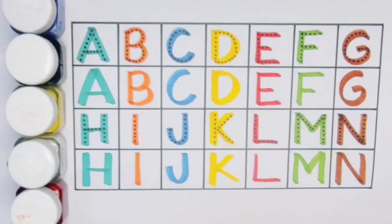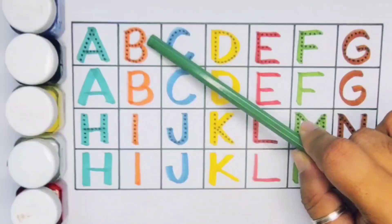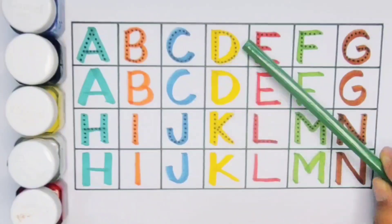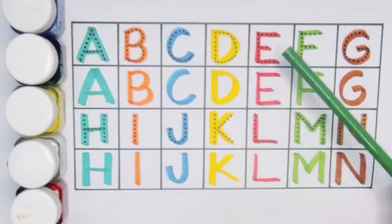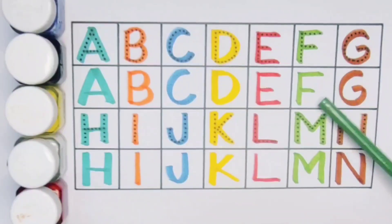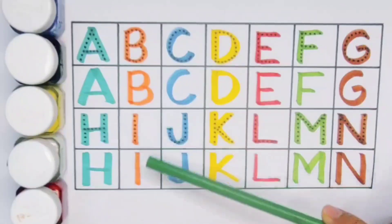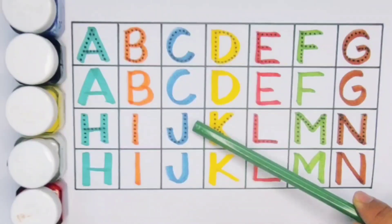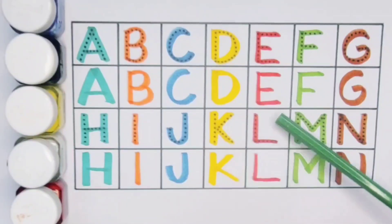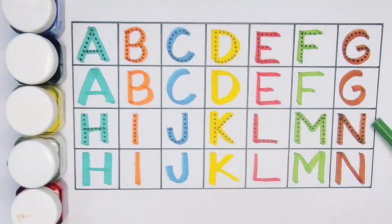What we learn? We learn: A for aeroplane, B for bus, C for cow, D for drum, E for egg, F for fire, G for gorilla, H for helicopter, I for insect, J for jog, K for key, L for lion, M for mouse, N for net.